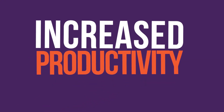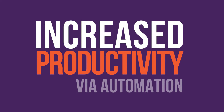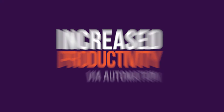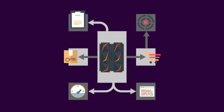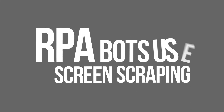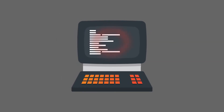Robotic process automation can provide enterprises with significant productivity increases by automating human tasks. Within these organizations, RPA bots often interact with the mainframe, and when this happens, RPA bots use screen scraping to interact with the mainframe.